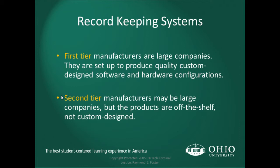There are two types of record keeping systems: first tier and second tier. First tier manufacturers are large companies set up to produce quality, custom-designed software and hardware configurations. The challenge between buying first tier and second tier is obviously the money involved — first tier manufacturers tend to be very pricey, but the advantage is custom-designed software specifically for your agency and your processes and procedures. Second tier manufacturers may be large companies, but the products are off the shelf, so you buy something and have to adapt your procedures and policies to fit those systems.